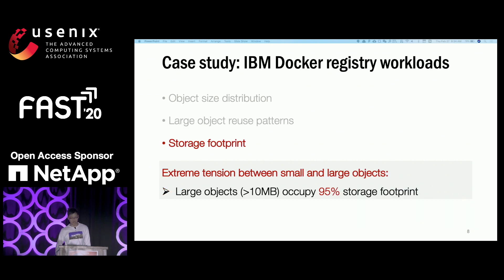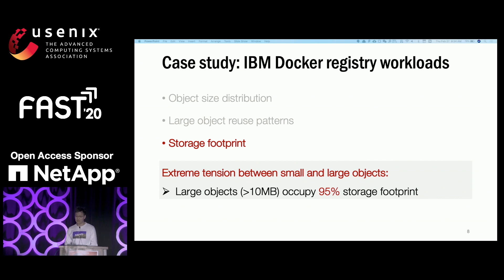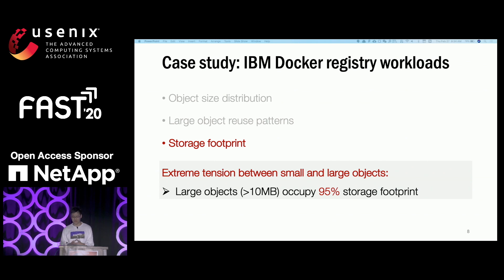But it is a challenge to cache large objects. Based on our study, more than 95% of storage footprint is occupied by objects over 10 megabytes. So if we want to cache both small and large objects in a limited-capacity in-memory cache, the large objects will consume a lot of memory space and bandwidth resources, causing severe tension between small and large objects.